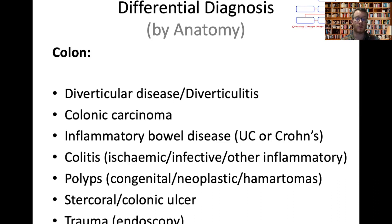There may be other types of colitis — indeterminate inflammatory colitis, as well as ischaemic conditions and septic colitis. Polyps can be neoplastic or congenital. There are also ulcers of the lining of the colon — a stercoral ulcer is due to a hard rock of faeces that led to pressure erosion of the bowel lining.